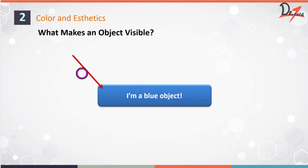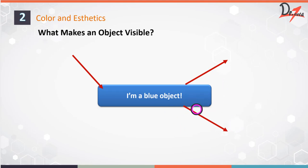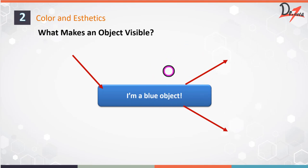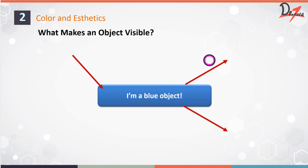When light falls on an object, some of it will be reflected and some of it will be transmitted. Some of it will be absorbed and some of it will be scattered, and that happens at a certain wavelength. The color perceived of an object depends on the wavelength of the light reflected by the object.